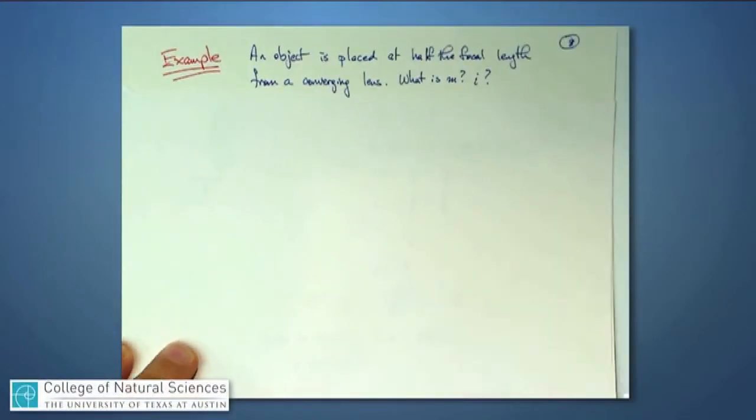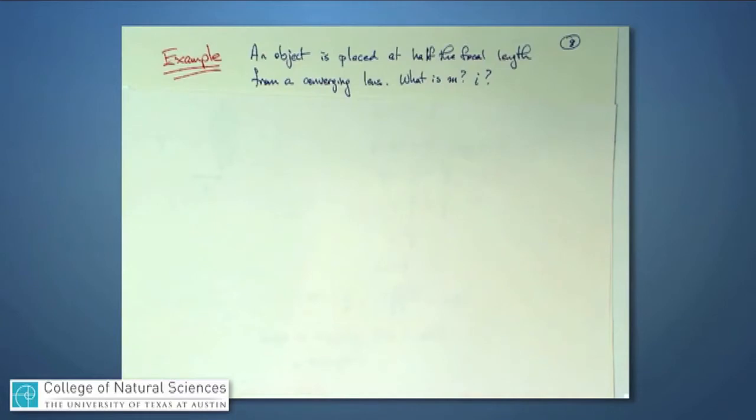I'm going to do a second example now. This would be, again, a typical word problem that you could be given. An object is placed at half the focal length from a converging lens. And I could ask you, what's the magnification and what's the image distance, i?